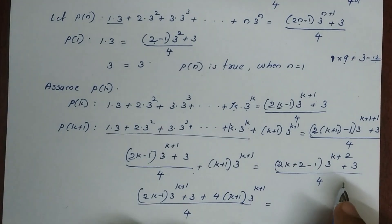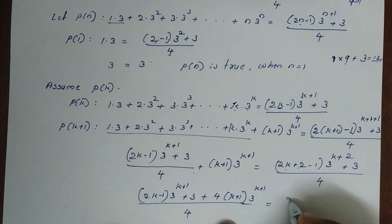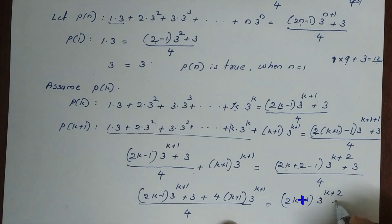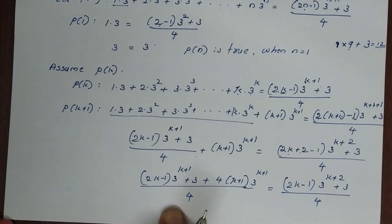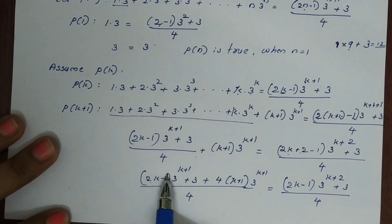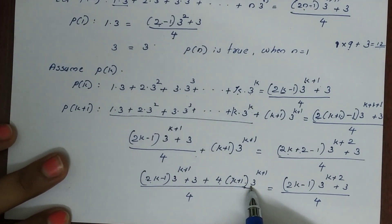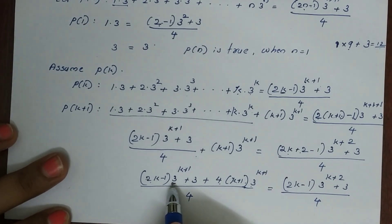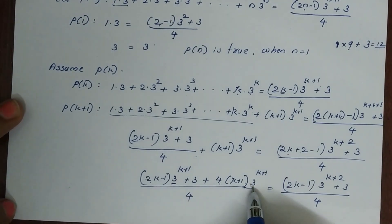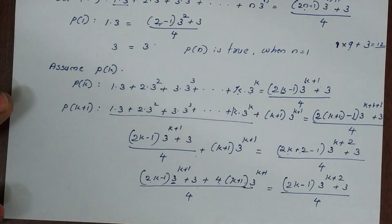Now, 2k plus 2 minus 1 is 2k plus 1. So we get 2k minus 1 into 3 raise to k plus 1, plus 4 into 3 raise to k plus 1. Here there is 3 raise to k plus 1 common: 2k minus 1 into 3 raise to k plus 1 and 4 into 3 raise to k plus 1, giving 3 raise to k plus 2, the whole divided by 4.